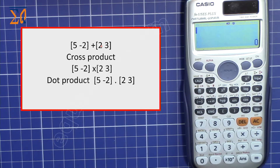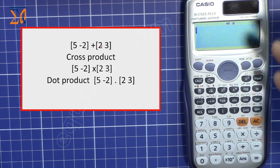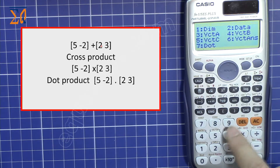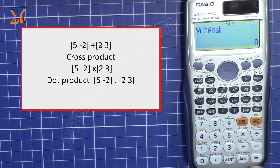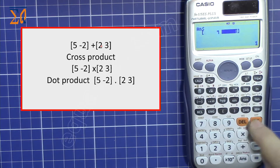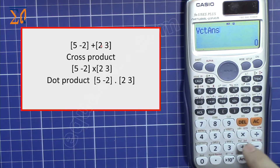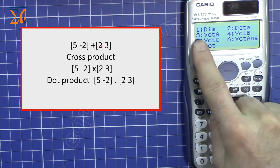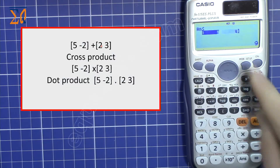Many times you need to use the result of one calculation in another. You can access the previous result using VectAns — press Shift, vector, and number six. For example, press Shift, five, VectAns (number six), plus Shift, five, vector A (number three), and press equal to get the new resulting vector.